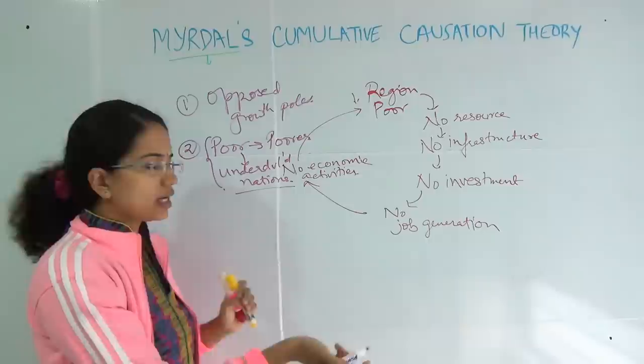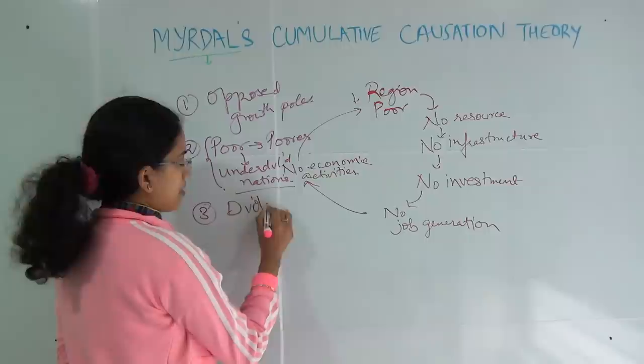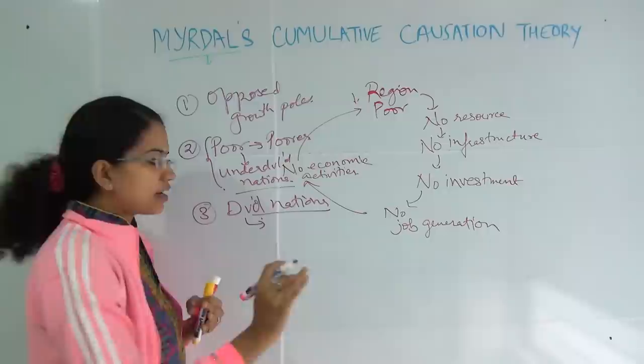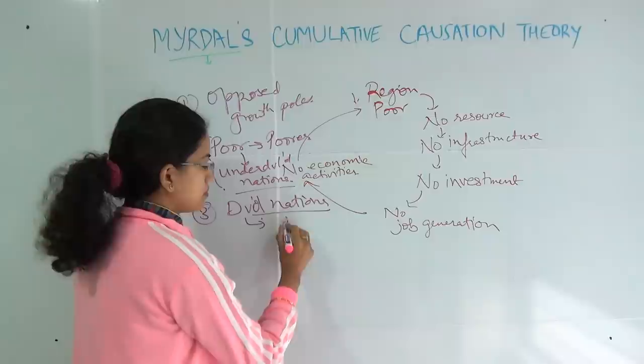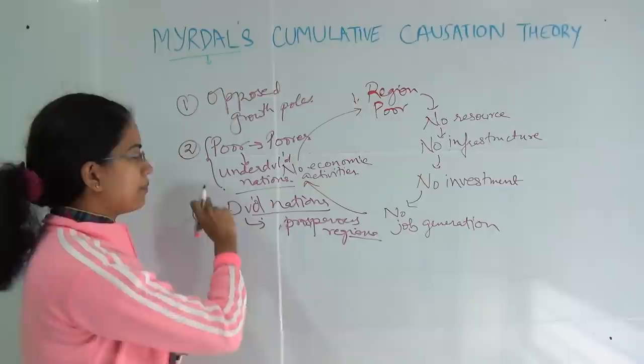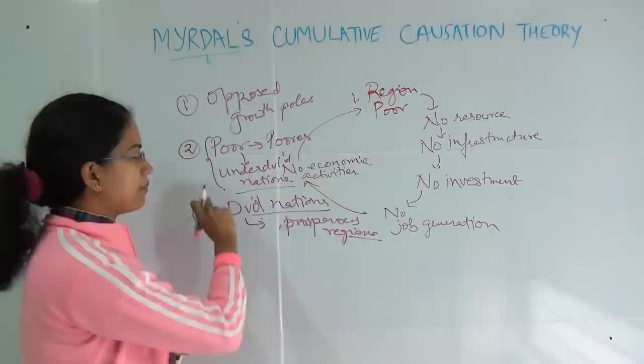What happens in a developed nation is that the region which is rich tends to grow further rich at a faster pace. So developed nations provide a good start point for prosperous regions — prosperous regions have a much better advantage in a developed nation as compared to a developing nation. His theory was much more realistic and simplistic as compared to other theories in regional development. This was the basic concept of Myrdal's cumulative causation theory. We will be talking about more theories of trickle-down effect and polarization in further classes.